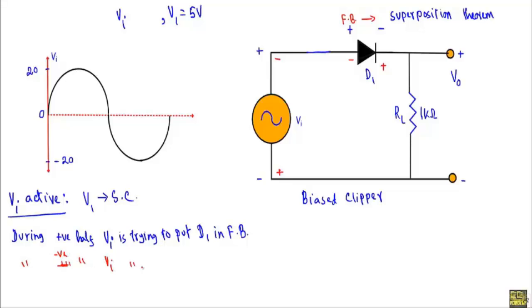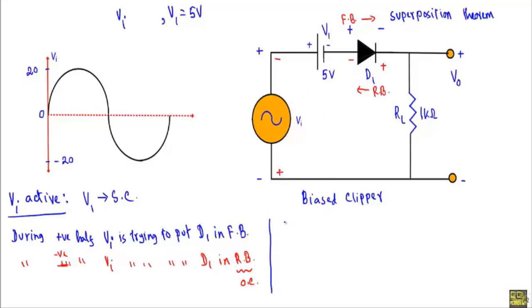During the negative half cycle, the input voltage vi is trying to put diode D1 in reverse bias. When a diode is in reverse bias it behaves like an open circuit, and there is only a very small leakage current. Now consider the case when V1 is active - we mentally replace the input voltage with a short circuit.